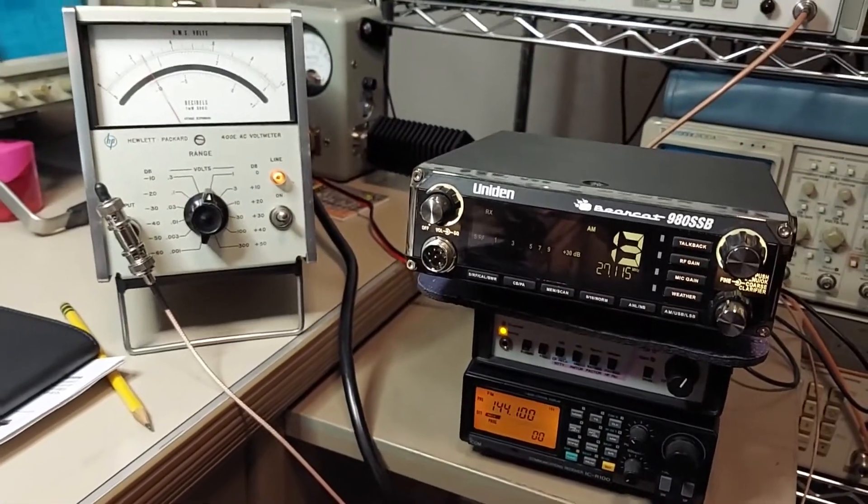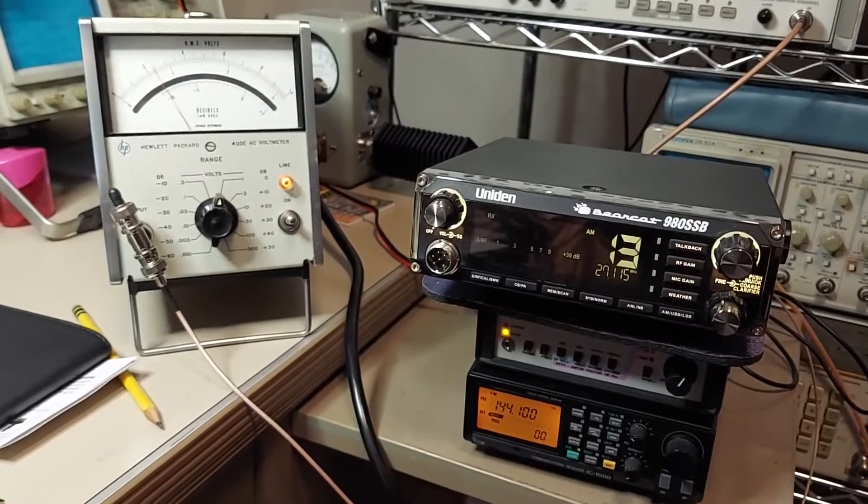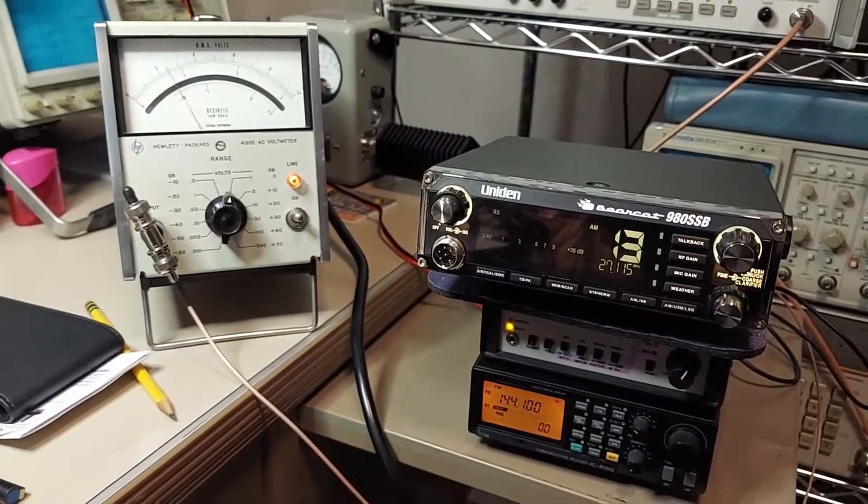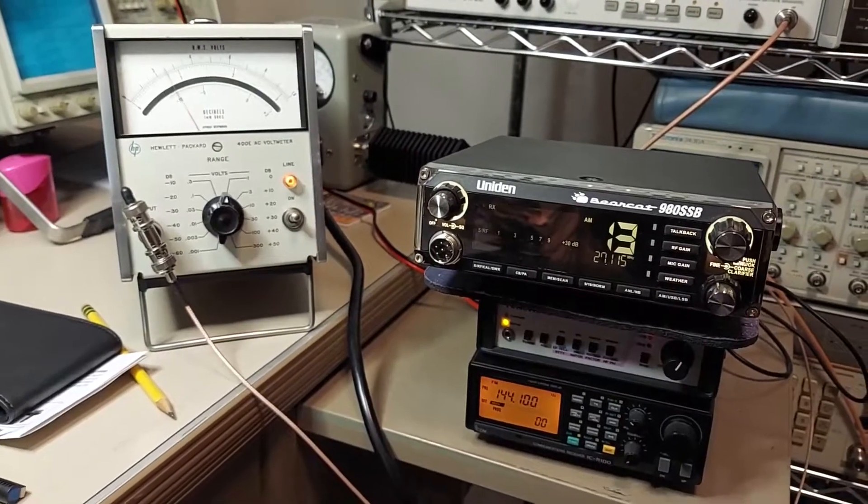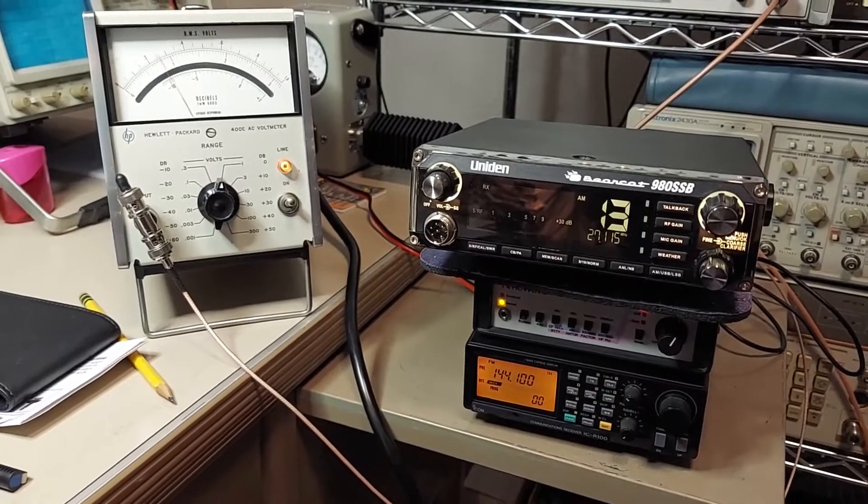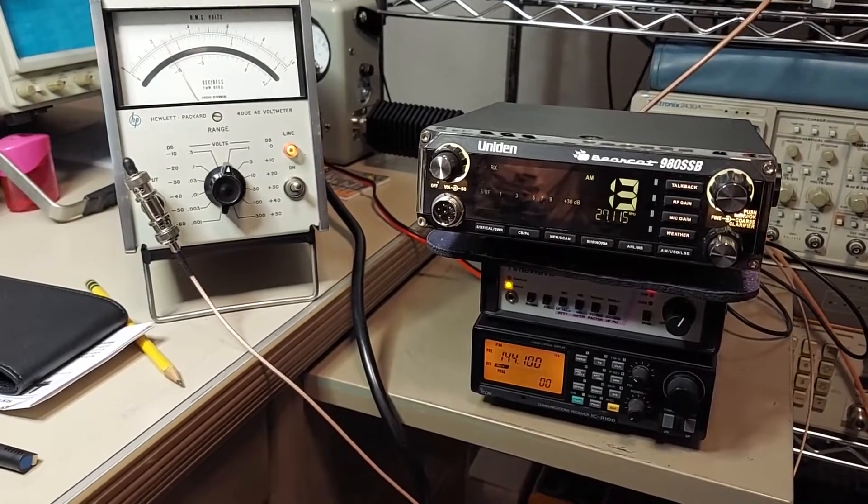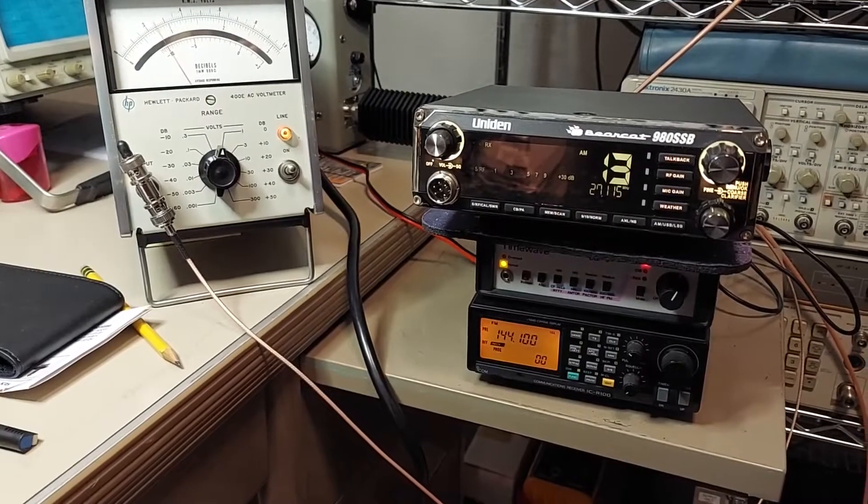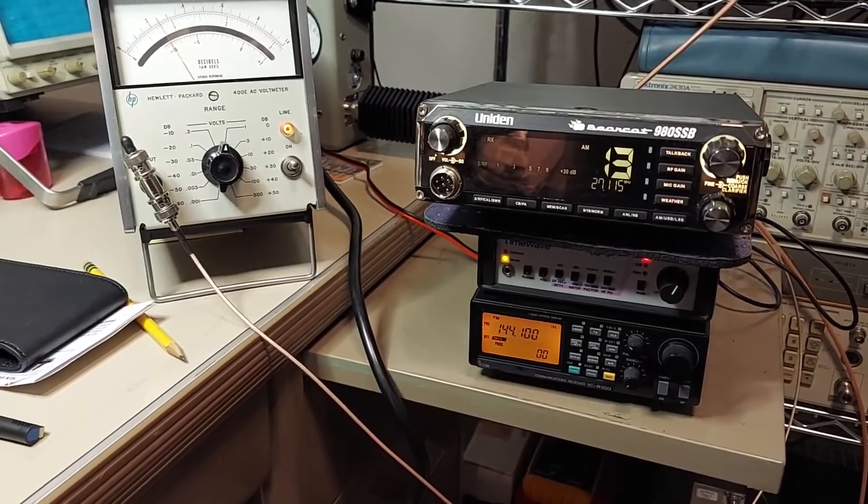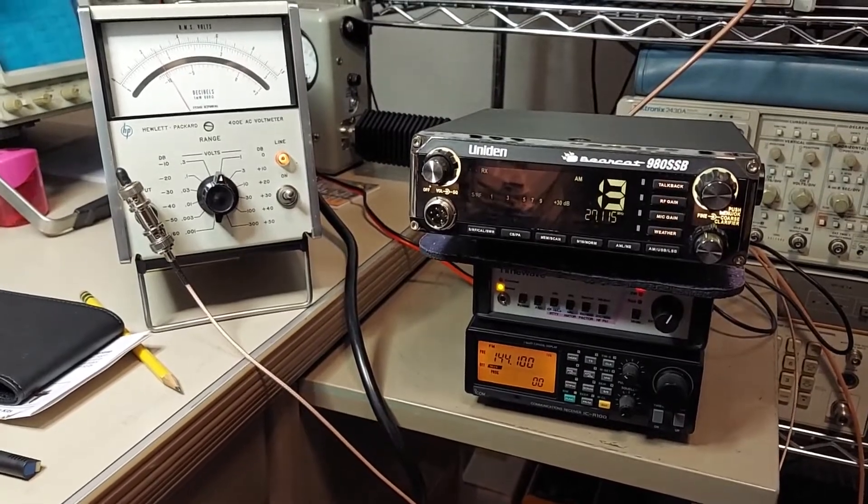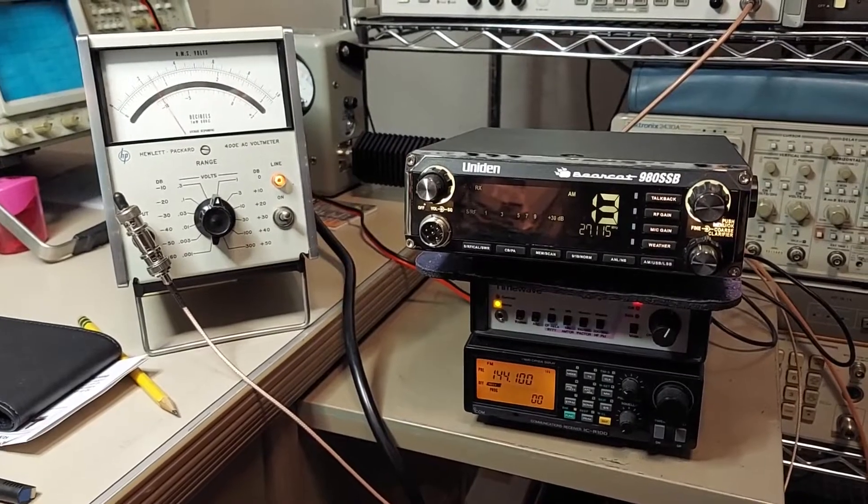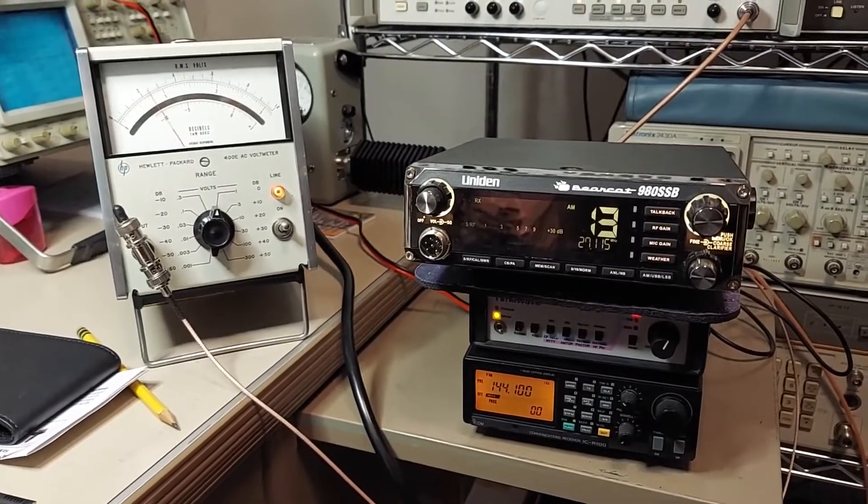Today I thought it would be fun to go over how to measure receiver sensitivity. We're going to use these two radios here - this Bearcat 980, a single sideband CB transceiver, and on the bottom we're going to measure the receiver performance of this ICOM R100. We're going to use two different measurement techniques: the SINAD method and signal plus noise over noise method.